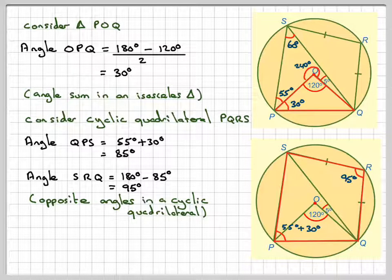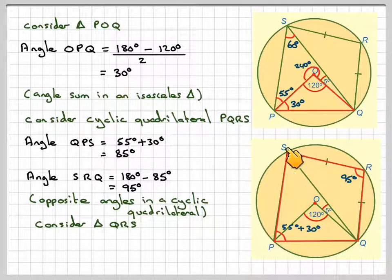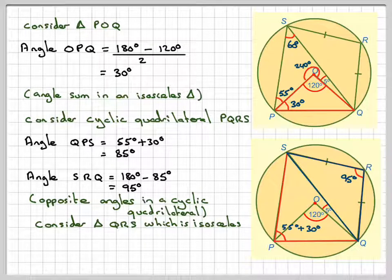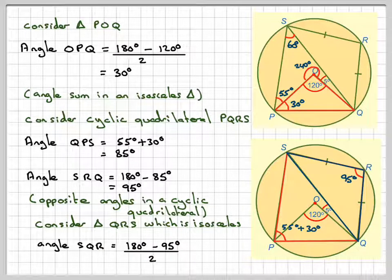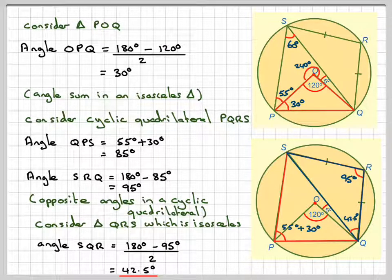Now, if this is equal to 95, I now have an isosceles triangle here. Consider triangle QRS, which is that one, it is an isosceles, the one highlighted in blue. Therefore that angle and that angle are the same, therefore I can find the angle SQR by doing 180 minus 195 divided by 2, which gives me an answer of 42.5. Again, quite a lot of steps in order to get to the final answer. I hope you've understood, and I thank you very much for watching.